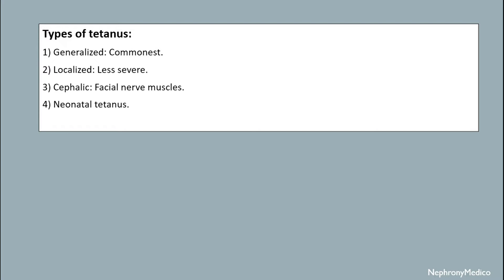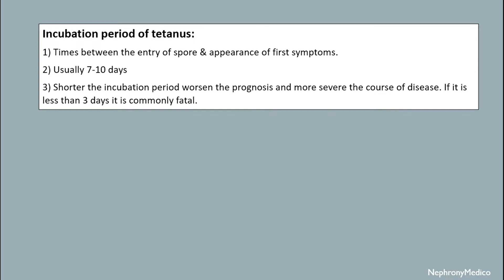Types of tetanus: it can be generalized (which is commonest), localized, cephalic, or neonatal tetanus. The incubation period — the time between entry of the spore and appearance of the first symptom — is usually seven to ten days. A shorter incubation period indicates a worse prognosis and more severe course of disease.